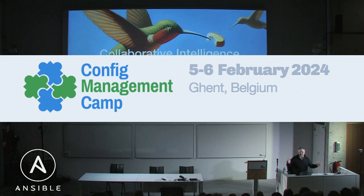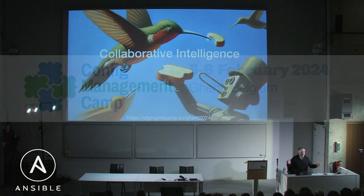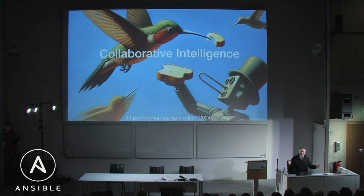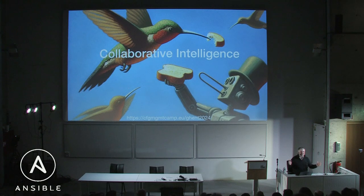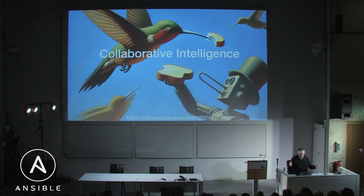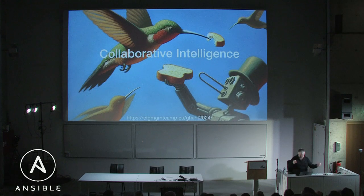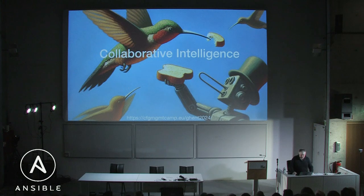Collaborative intelligence. When you get asked to submit a talk, you make up a fancy title, and then two days before the event you're thinking: what the hell was I thinking? Bear with me — there's something about collaborative intelligence because I'm going to talk about AI and people and how that works.